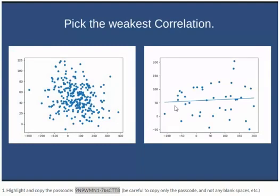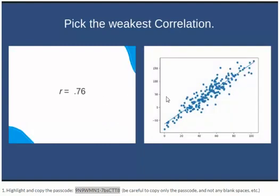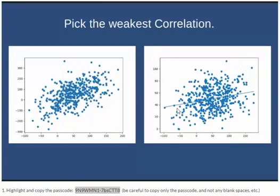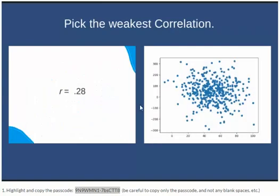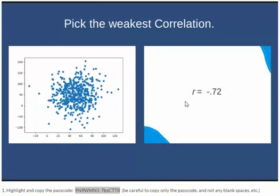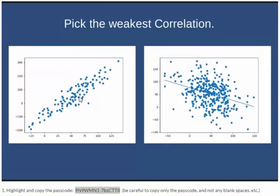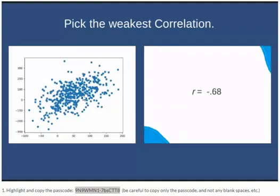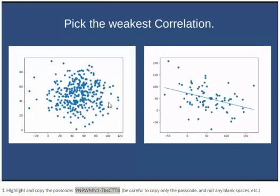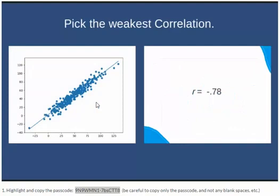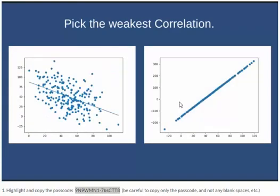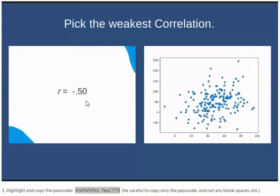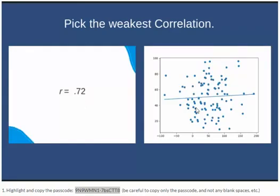The further you are from zero, the stronger the correlation; the closer you are to zero, the weaker — and that's the one we want. By doing this activity, you're going to become more familiar with how to read scatter plots and how to get a sense of how they compare against a Pearson's r value. This is one of those things where practice really helps you get better and better.